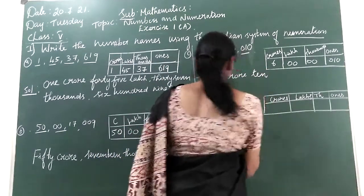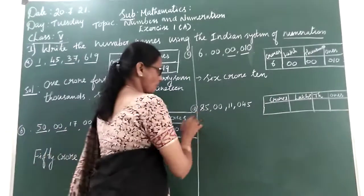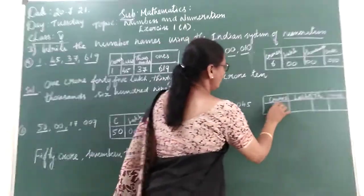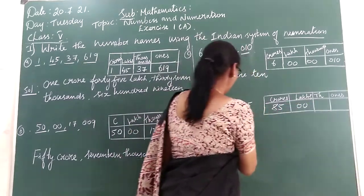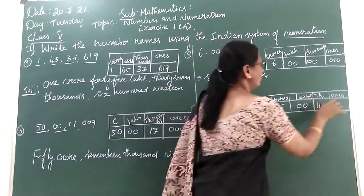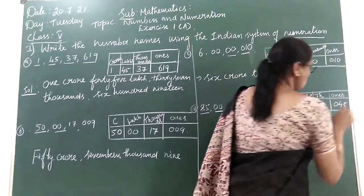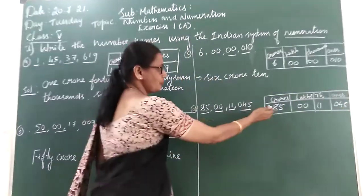Now these are 85 in crores period, 0 in lakhs period, 11 in thousands period, 45 in ones period. Now read this number: 85 crore 11,045.